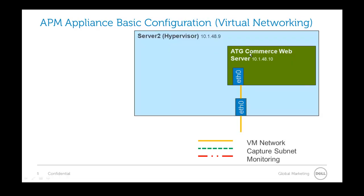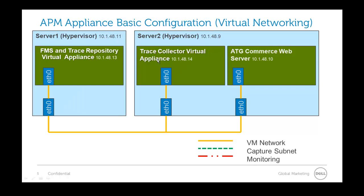Here's a simple example using an ATG Commerce web server as our monitoring target. It has ETH0 connected to the VM network, which is the company network — the main line coming in to all servers in your environment. We'll put in a trace collector virtual appliance, and on a separate hypervisor, install the FMS and trace repository virtual appliance. Then we connect monitoring: ETH2 is connected to the monitoring network for ETH0, so everything going to ETH0 has a copy sent to ETH2.